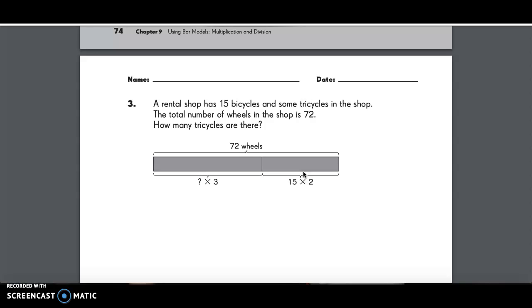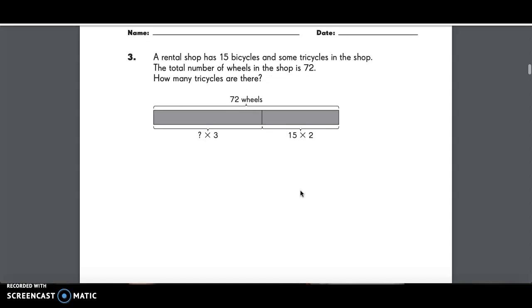Number three, a rental shop has 15 bicycles with some tricycles in the shop. The total number of wheels in the shop is 72. How many tricycles are there? Remember to use the drawings given to you.